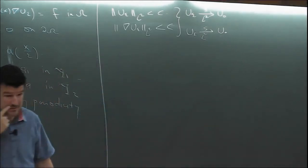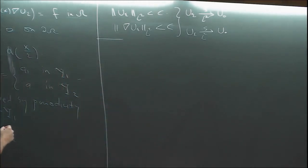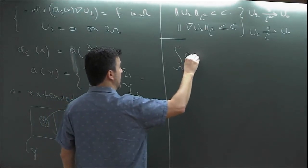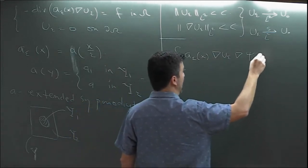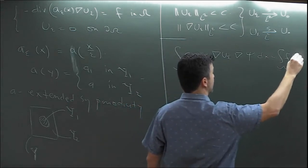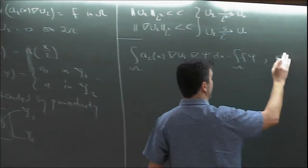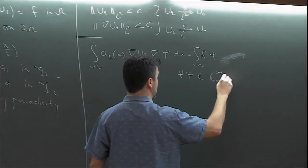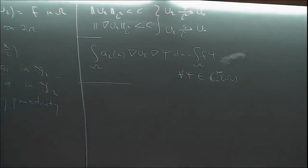Under the variational formulation, the problem to pass to the limit is: multiply with a test function ψ in the space of test functions with compact support, in the context of zero Dirichlet data. For this, we introduced the unfolding operator.